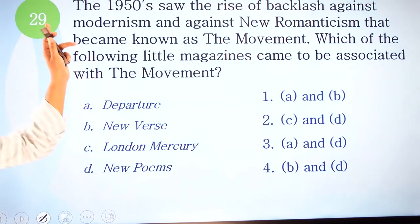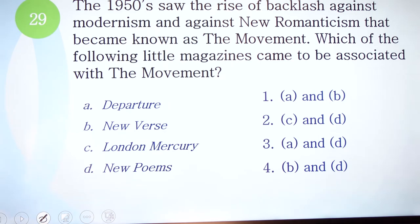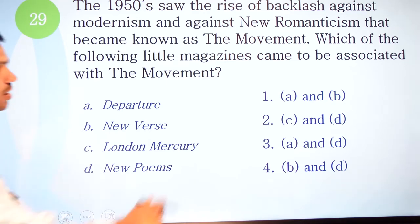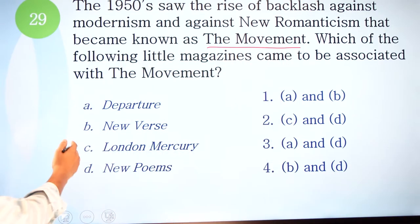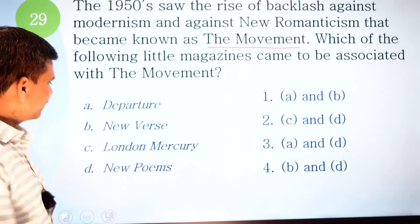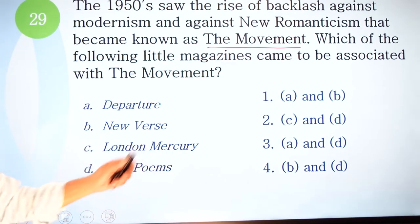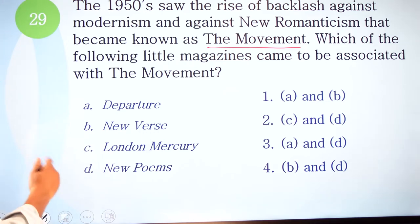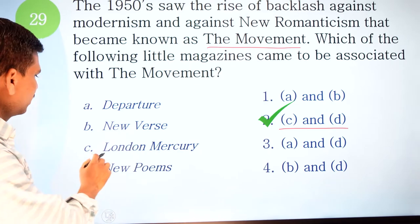Question 29: the 1950s saw the rise of a backlash against modernism and against new romanticism that became known as 'the Movement.' Which of the following little magazines came to be associated with the Movement? Options are A) Departure, B) New Verse, C) London Mercury, and D) New Poems. The correct option is number two — C and D — so London Mercury and New Poems are the magazines associated with the Movement.